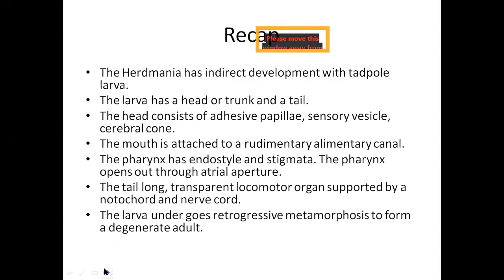Before starting with the exact process of retrogressive metamorphosis, let us have a brief recap on what we discussed in the previous session. As we all know, in the section of Herdmania, there is indirect development. Indirect development means there is a larval form which develops into the adult. The larval form is known as Tadpole-Larva.